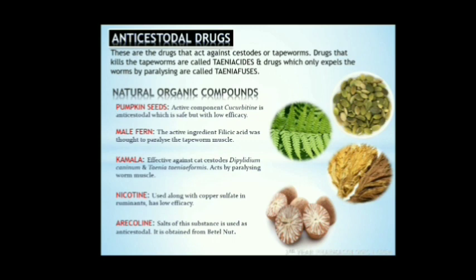The next is male fern. The powdered rhizome was used in early periods, especially by Greek physicians, against cestodes. The active ingredient filicic acid is responsible for anti-cestodal action by paralyzing the muscle of tapeworms. Next is kamala. It acts against cestodes of cats, especially Dipylidium and Taenia. Kamala is obtained from fruits of Mallotus philippinensis, a plant found in the Philippines, India, China, and Australia. It mainly acts by paralyzing the tapeworm muscle. However, this is obsolete due to low efficiency. Nicotine is a low-efficacy compound usually used along with copper sulfate in ruminants. Arecoline is obtained from betel nuts; salts of arecoline are very useful anti-cestodals.